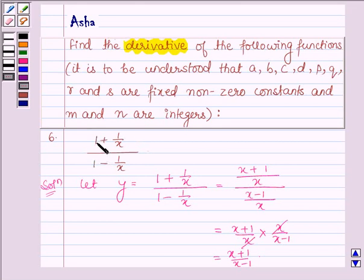Now, the given function is 1 plus 1 upon X upon 1 minus 1 upon X. For X equal to 0, this function is not defined, since 1 upon 0 is not defined. And also, if we take X is equal to 1, then in the denominator we get 0. And for the quotient rule, the derivative of the quotient of two functions is applied if the denominator is non-zero.